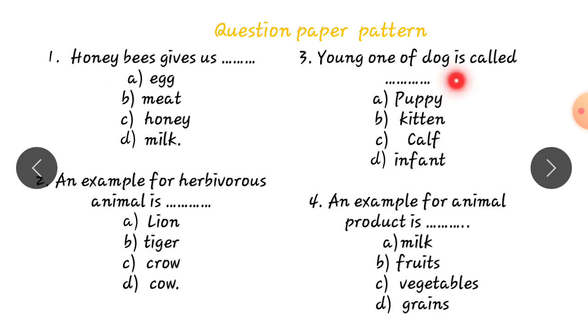For example, I have a demo. These questions are there. This type of questions are there. First one. Honey bees gives us egg, meat, honey, milk. Correct option is honey. Children, that means, C selects. Touch. Select.